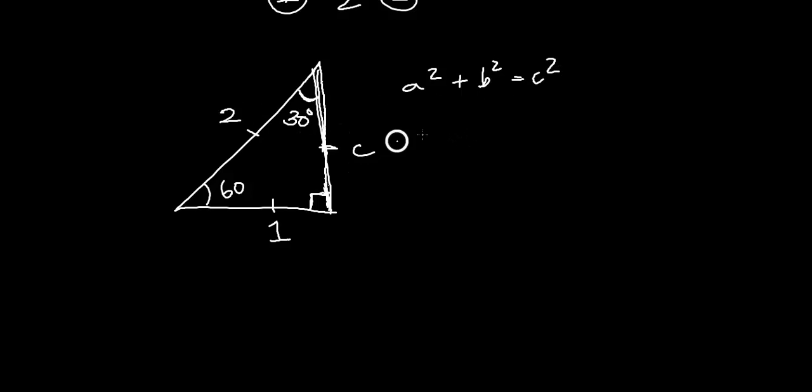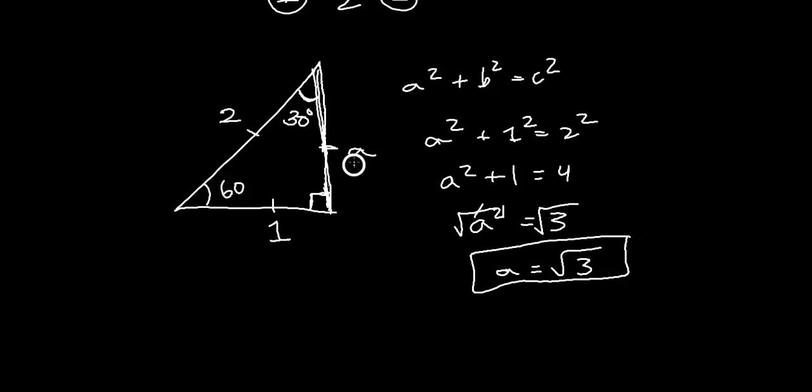So it's a squared plus b squared equals c squared. a squared plus 1 squared equals 2 squared. This is going to be a 4, this is going to be a 1 plus a squared. If you move this 1 on this side, you get 4 minus 1 equals 3 equals a squared. Take the root, so these guys cancel both sides, so a becomes square root of 3. So this is a square root of 3.